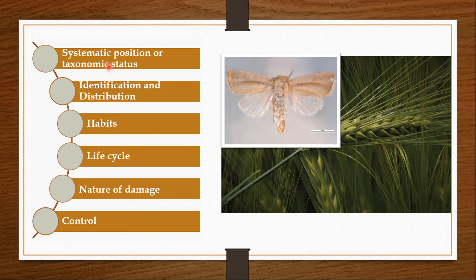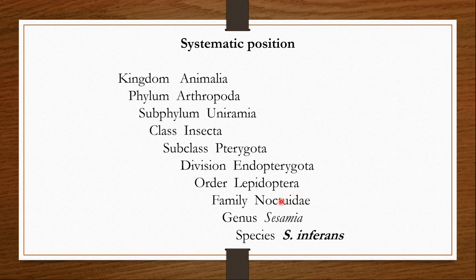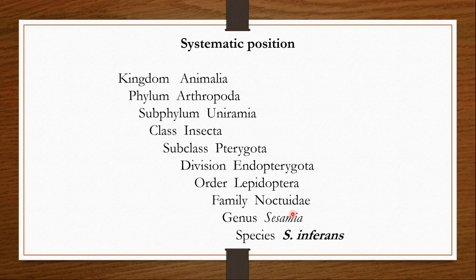Sesamia inferens belongs to phylum Arthropoda, subphylum Uniramia, class Insecta, subclass Pterygota, division Endopterygota, order Lepidoptera, family Noctuidae, genus Sesamea, and species Sesamia inferens. Order Lepidoptera includes all the moths and butterflies. Sesamia inferens is a moth, so it belongs to order Lepidoptera. Family Noctuidae includes many dull-coloured moths and many economically important pests, and Sesamia inferens is just one of them.